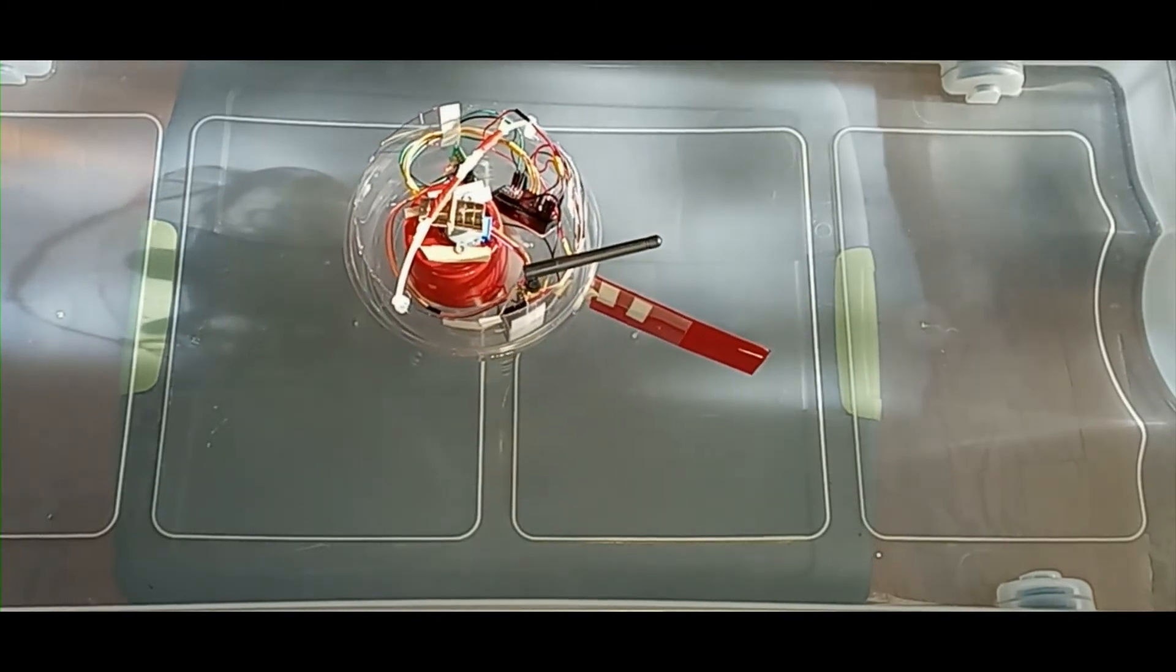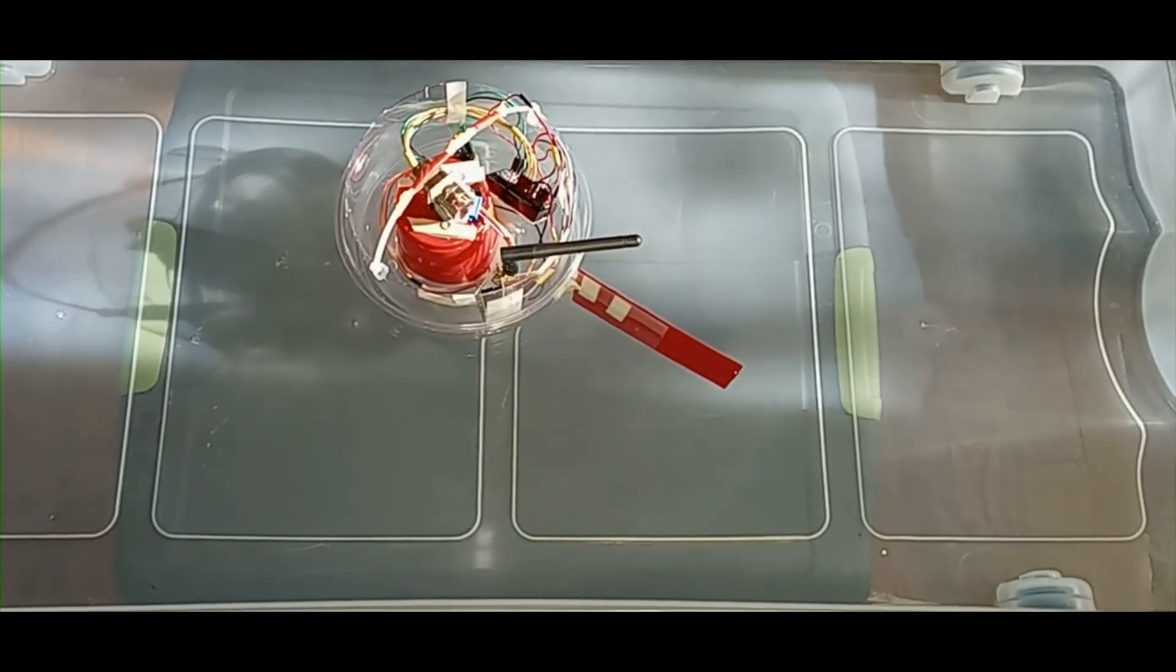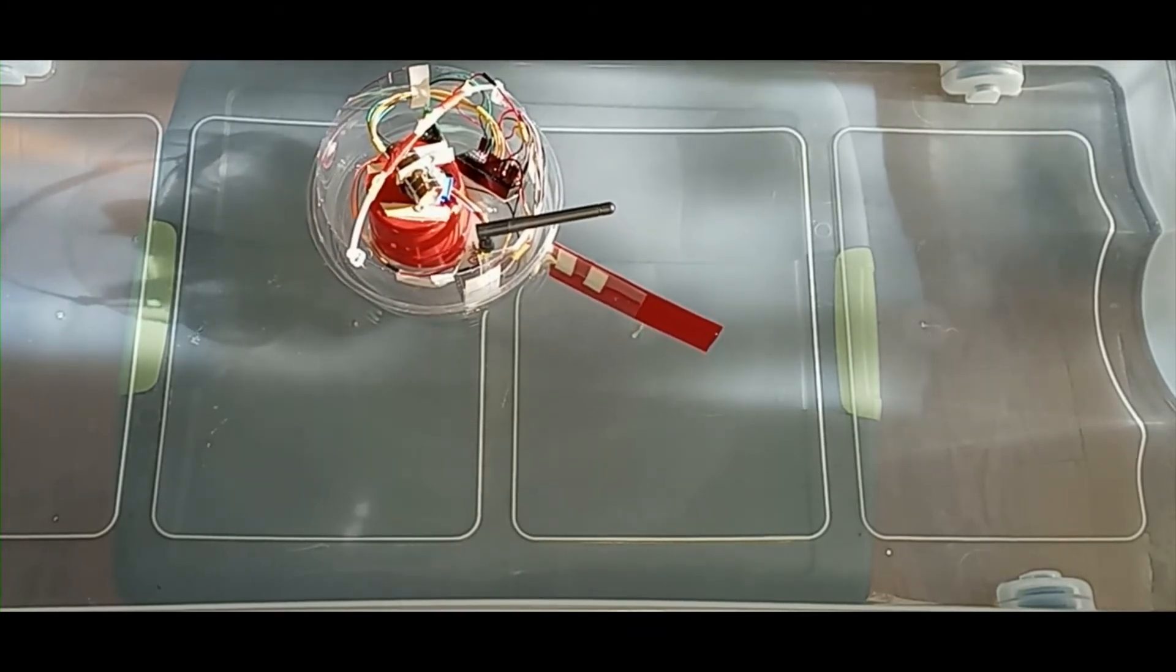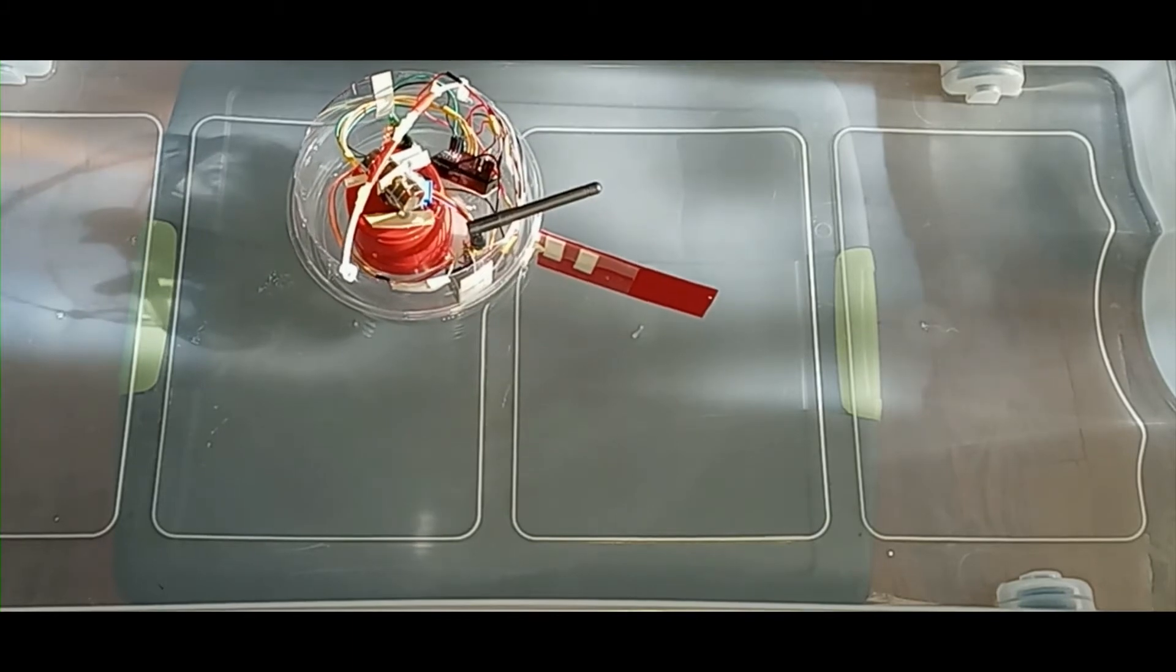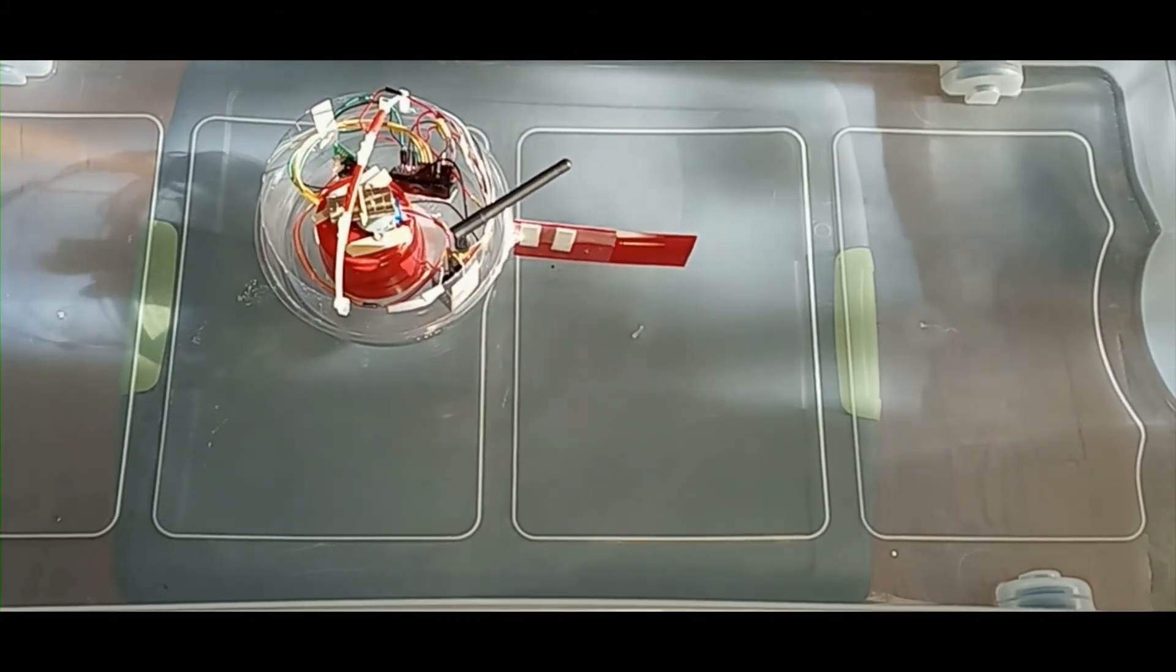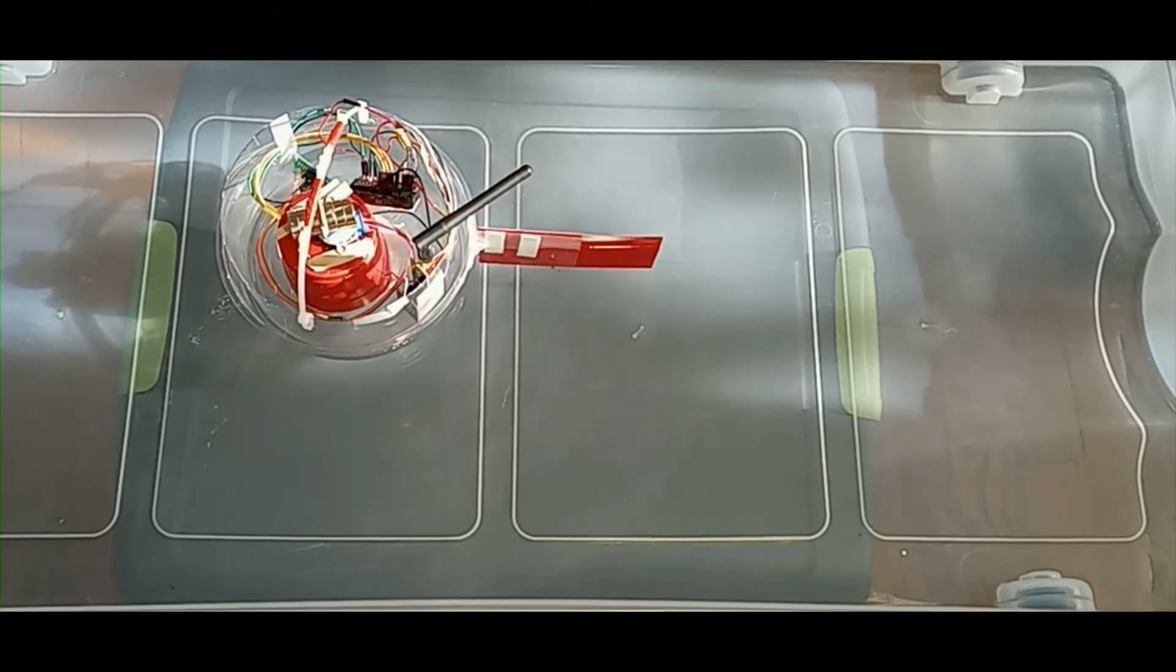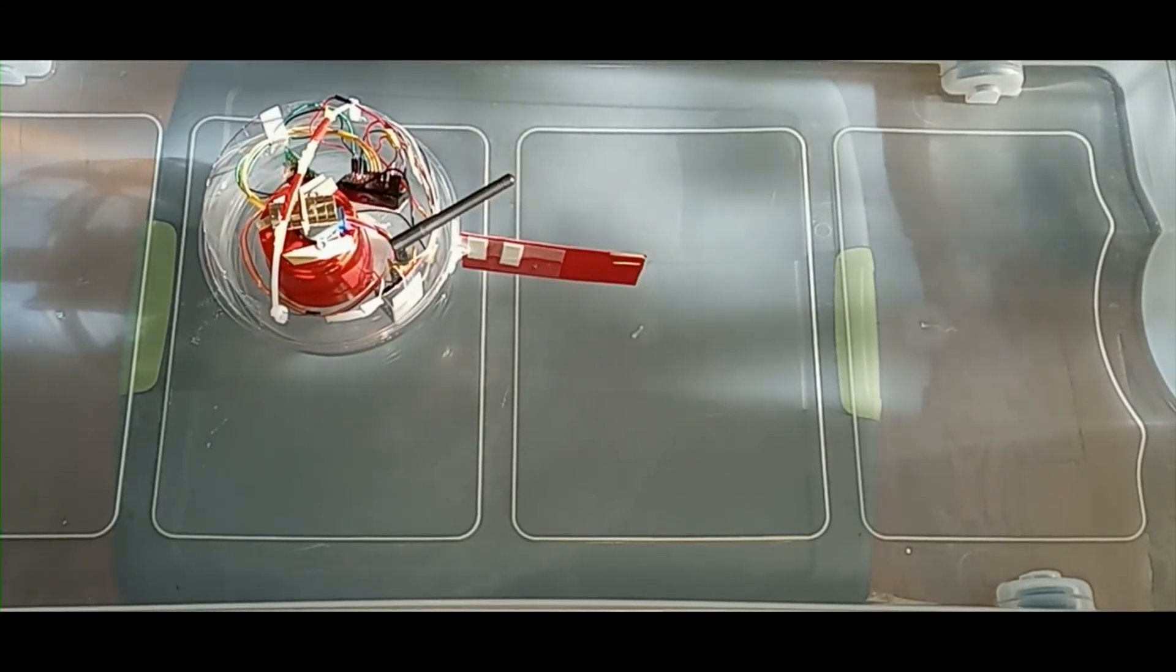But as soon as the servo turns the magnet east or west, the magnet acts like a compass and turns the boat until it points north again. As it turns the boat, the fin at the back of the boat pushes through the water. This propels the boat.